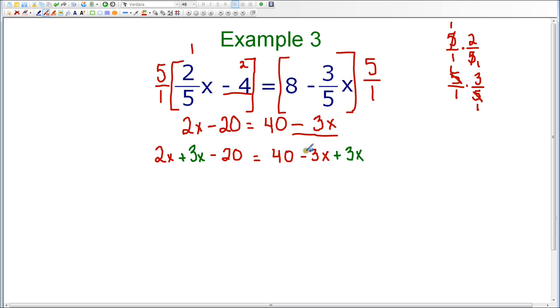Now on the right-hand side, the reason I did this is negative 3x plus 3x is 0. I've been able to eliminate that term from the right-hand side. I'm left with 40 on the right-hand side. On the left-hand side, I have 2x plus 3x, which is 5x, and I still have the minus 20. So notice that just by adding 3x to both sides, I was able to get all of my variables on one side of the equation. And now I have a 2-step equation.